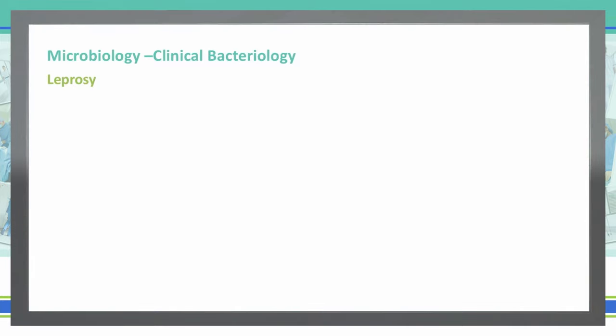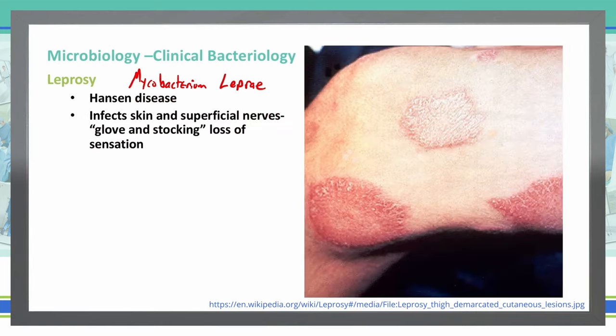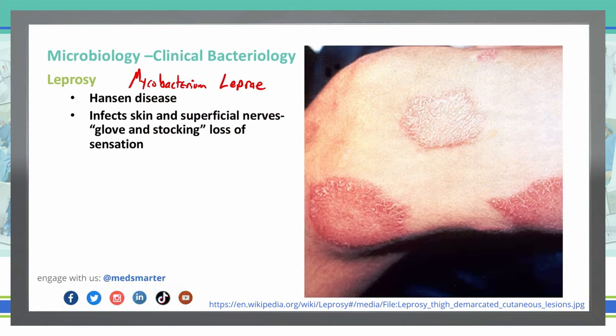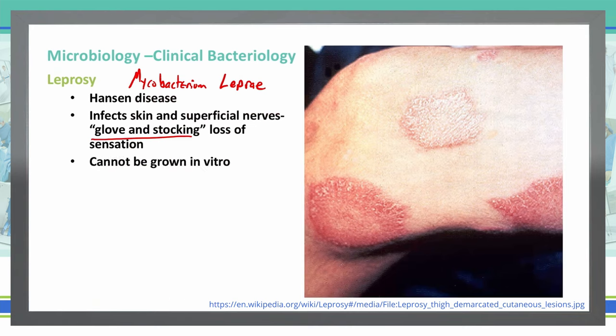Leprosy is caused by the bacteria Mycobacterium leprae, and it causes what we also know as Hansen's disease. Leprosy specifically infects the skin and superficial nerves. Oftentimes it follows a glove and stocking pattern where we lose sensation in our hands and our feet — where our gloves and stockings go — and we can't grow leprosy in vitro.